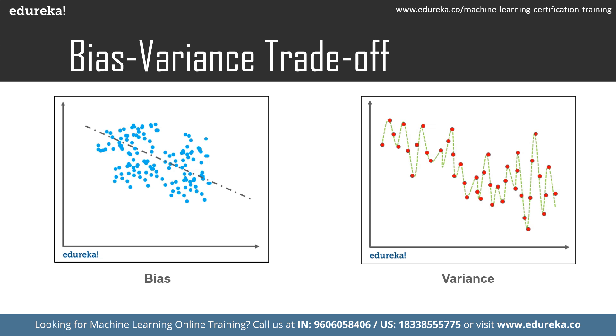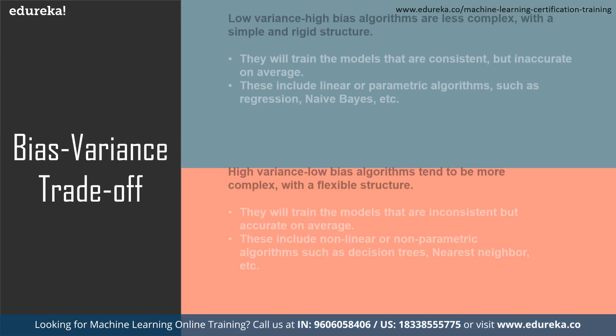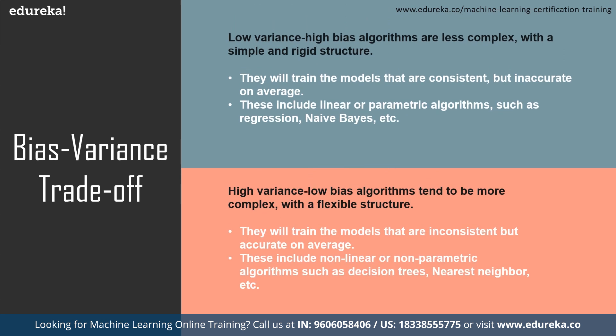Variance refers to the model's sensitivity to specific sets in the training data. A high variance algorithm will produce a model drastically different from the training set — imagine a super flexible unconstrained model that also learns noise from the training set, causing overfitting. In the bias-variance trade-off, machine learning is a repetitive process. Low variance, high bias algorithms are less complex with a simple and rigid structure — they train consistent but inaccurate models on average, such as linear or parametric algorithms like regression and naive Bayes. High variance, low bias algorithms tend to be more complex with a flexible structure — they train inconsistent but accurate models on average, such as nonlinear and nonparametric algorithms like decision trees and nearest neighbor.